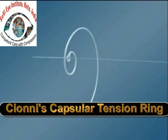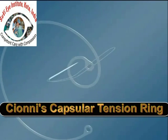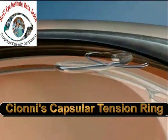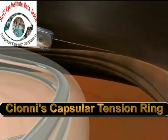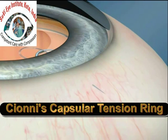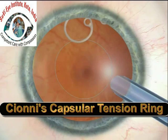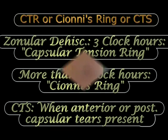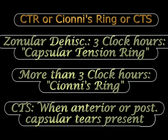For example, this is the Cionni modification of the capsular tension ring, where a hook projects out of a standard ring, protrudes beyond the capsulorrhexis margin, and has an eyelet that can be used to place a suture through the sclera. This provides additional stabilization of the capsular bag. Earlier techniques tried to pass sutures through the capsular bag itself, which was very traumatic; with this modification the hook projects out of the anterior capsule margin into the sulcus, and the eyelet is used to pass the suture.